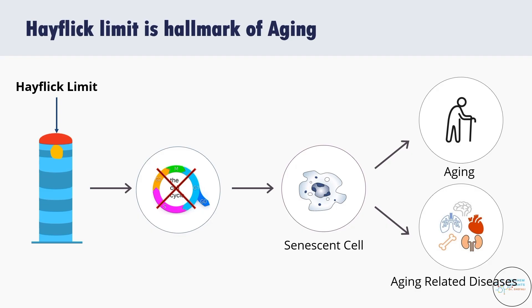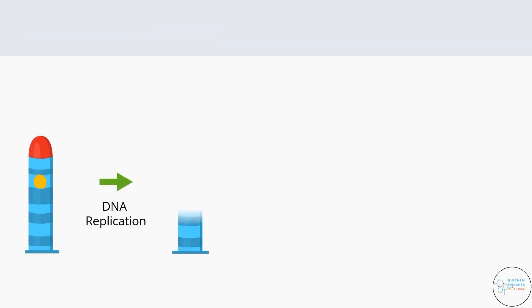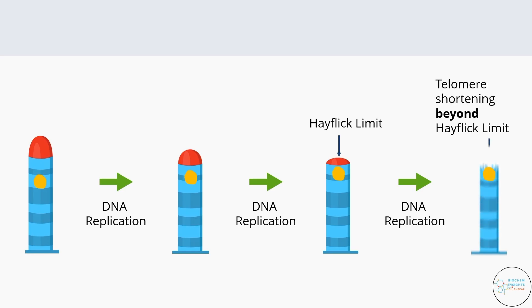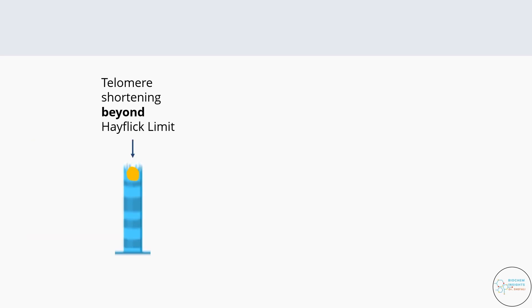A person can remain young only until they are capable of replenishing their losses — which depends on cell division. But once the critical length of telomere is reached, the cell will no longer enter the cell cycle, none of the losses get replenished, and that is when aging begins. Now, what if telomeric length gets shortened beyond the Hayflick limit? Then the ends of the chromosome can become unstable and break apart, interfering with nearby genes, triggering changes in gene expression patterns and causing mutations.